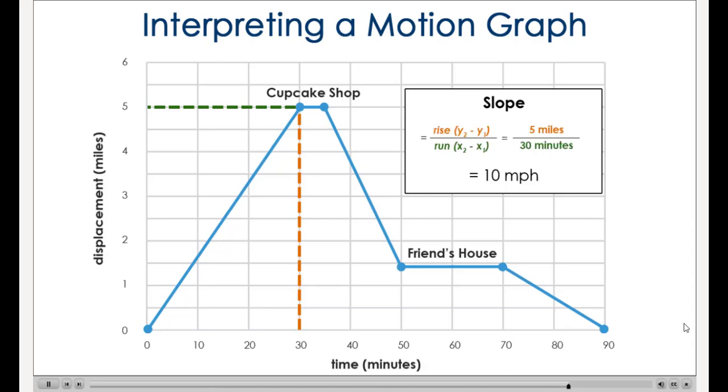Slope can be determined by finding the rise over run. In this case, the rise is 5 miles and the run is 30 minutes. That gives an average speed of 10 miles per hour.